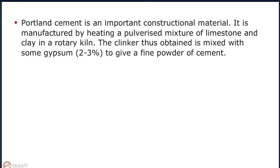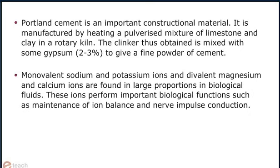Portland cement is manufactured by heating a pulverized mixture of limestone and clay in a rotary kiln. The clinker thus obtained is mixed with some gypsum, 2–3%, to give a fine powder of cement. Monovalent sodium and potassium ions and divalent magnesium and calcium ions are found in large proportions in biological fluids. These ions perform important biological functions such as maintenance of ion balance and nerve impulse conduction.